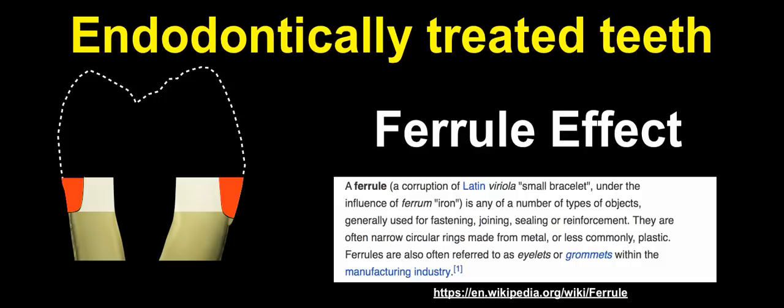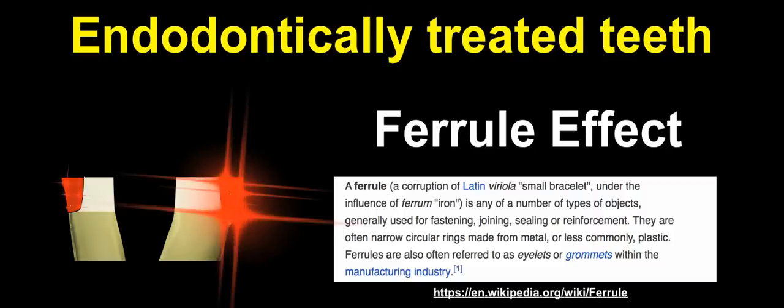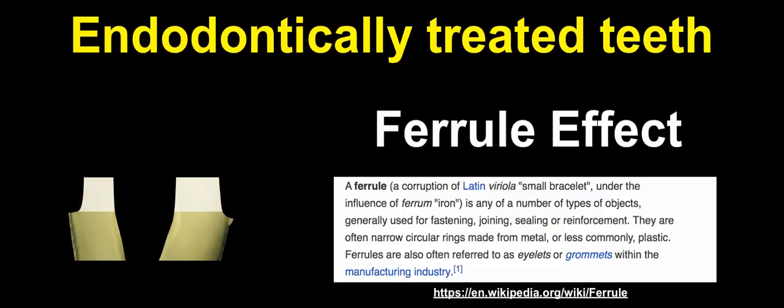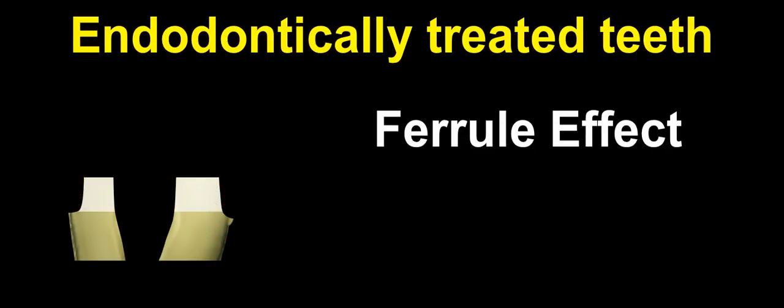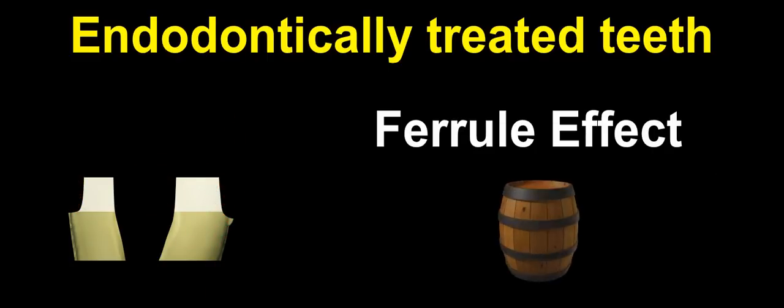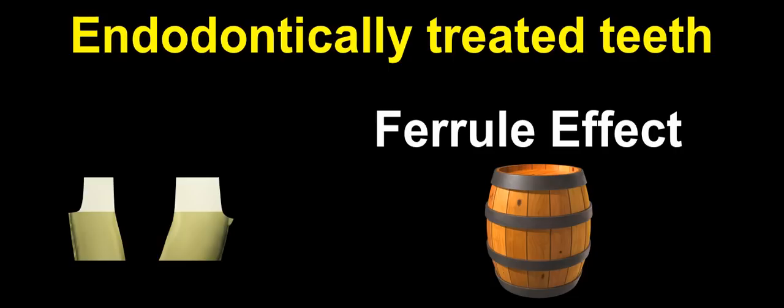Going to Wikipedia, we see that the ferrule is also associated with an object used for fastening, joining, sealing, or reinforcing an object. The most common association is the barrel — the rings around the barrel that keep the barrel in place so that it doesn't open when it has liquid inside.